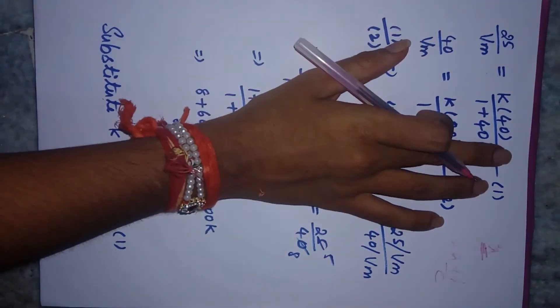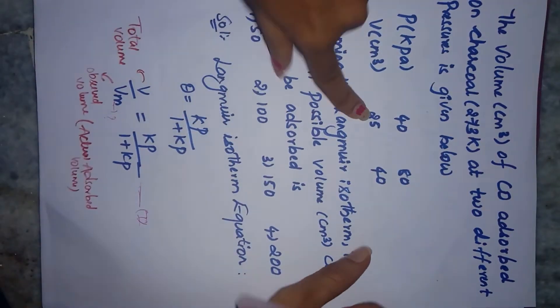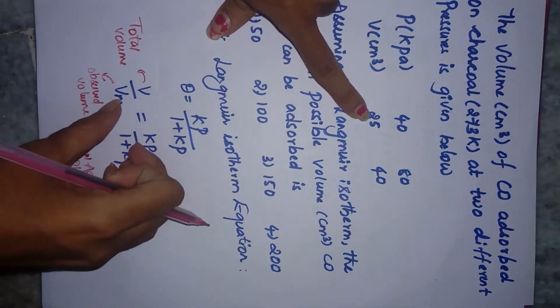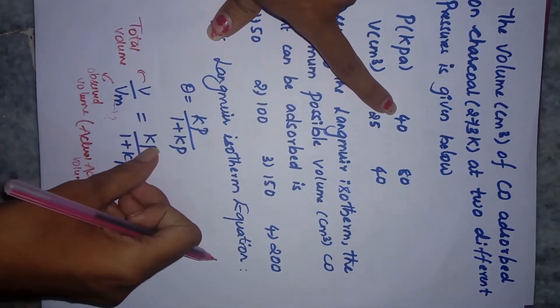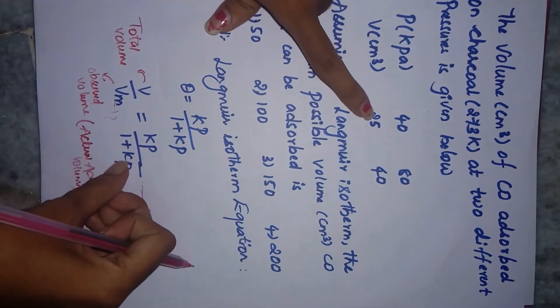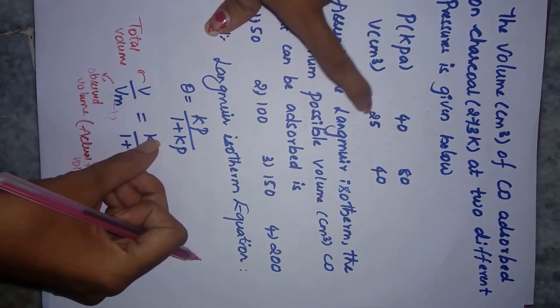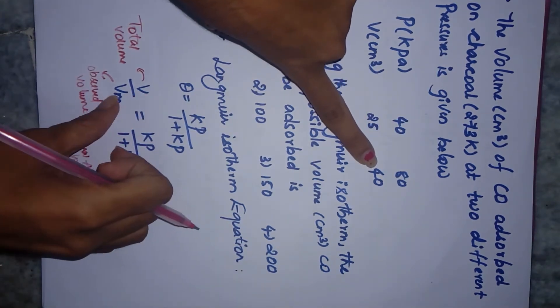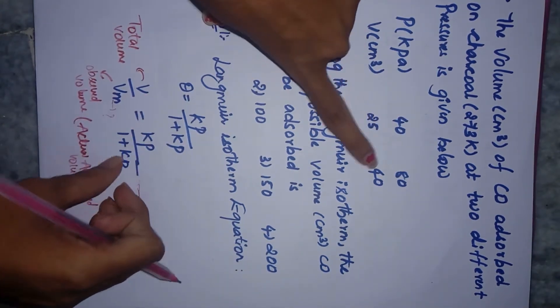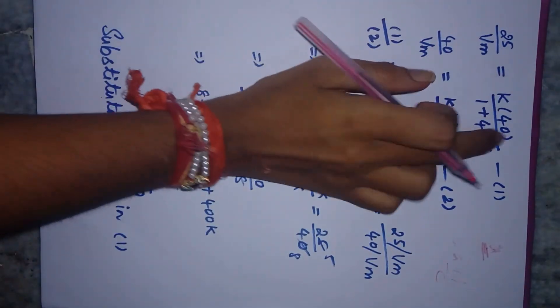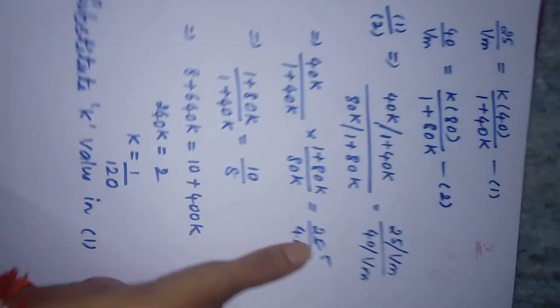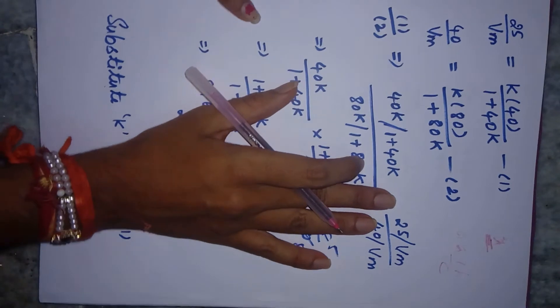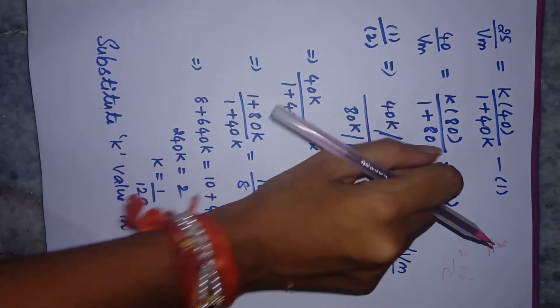I've substituted the first volume and pressure value: 25/Vm = (40K)/(1+40K). The second equation with the other volume and pressure value: 40/Vm = (80K)/(1+80K). This is the first and second equation, now we'll simplify.